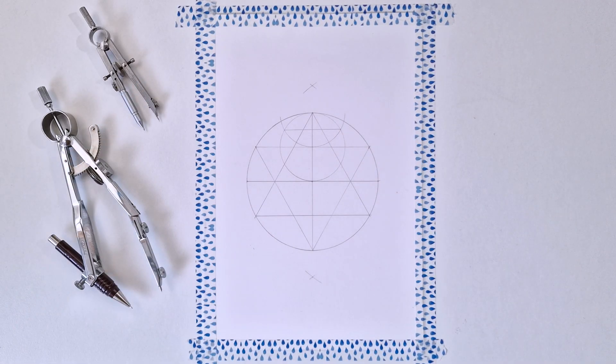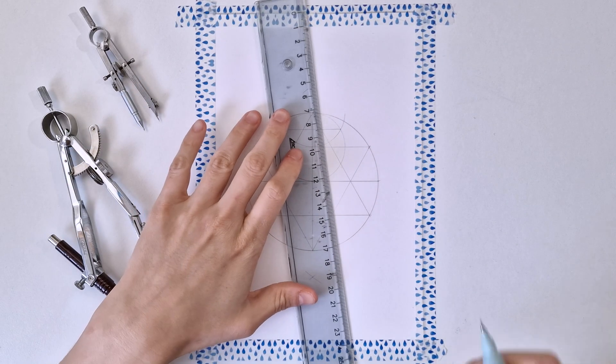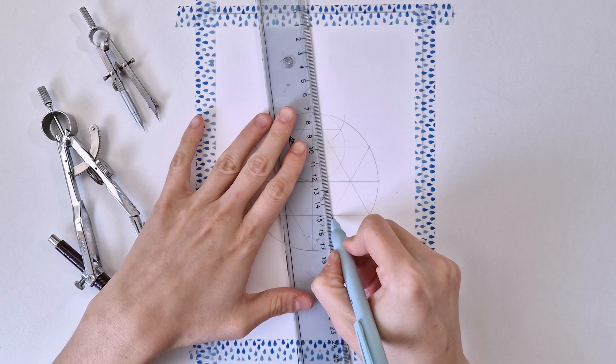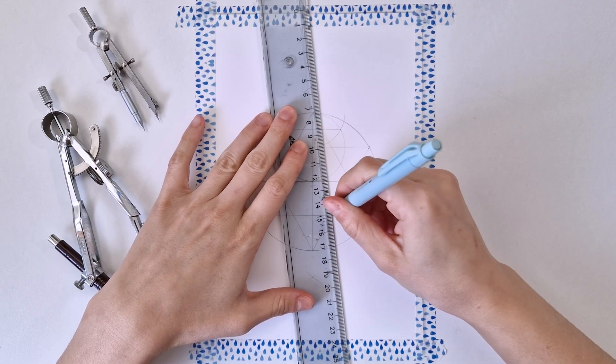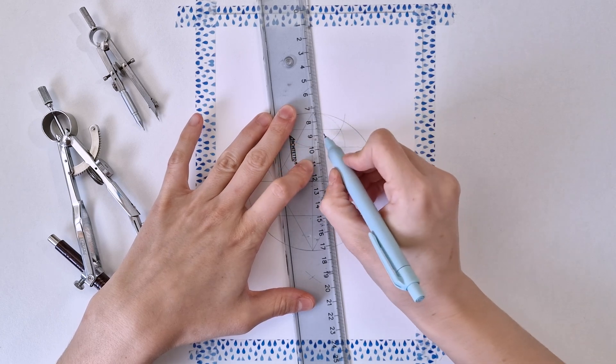And this line intersects the tip of the triangle. So I'm going to connect these two points with a line and extend the line to the circle, because that's the point that I need.